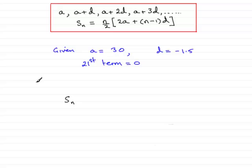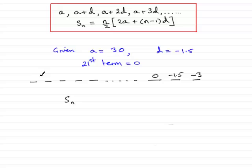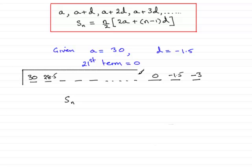What that means is that in our arithmetic sequence, all the way down to the 21st term which was 0, the 22nd term would be minus 1.5 because we'd have to add the common difference to this. The next term would be minus 3. Remember, it started off as 30, then the second term would be 28.5, and so on. So adding all terms up to 0 gives our largest positive value for Sn.